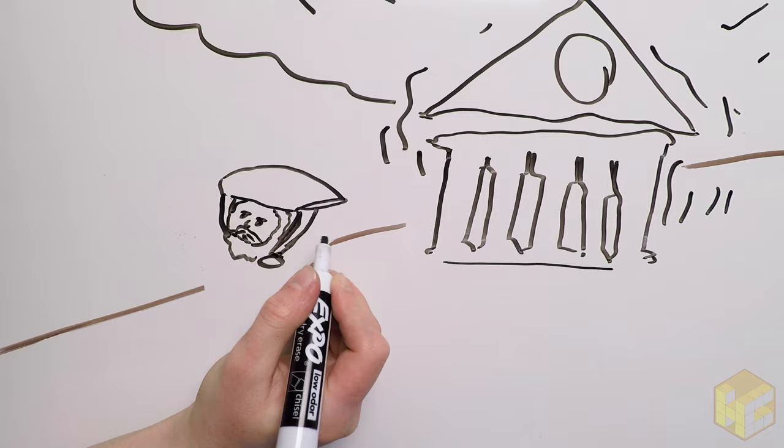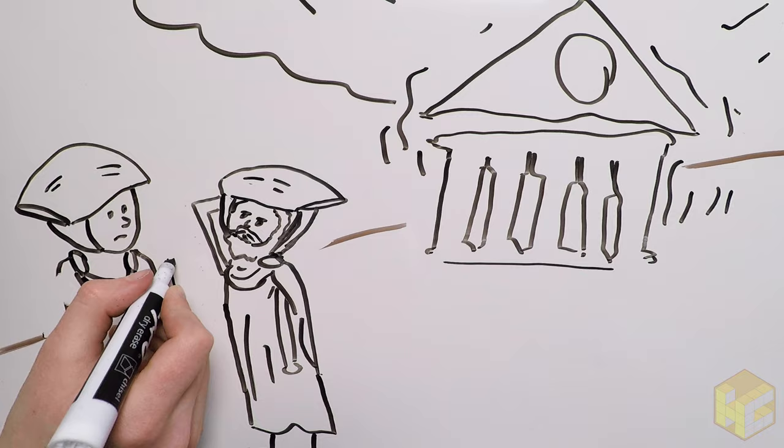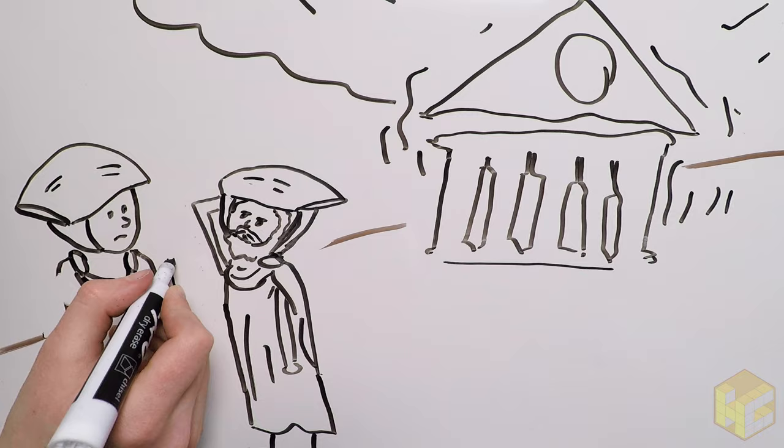Pliny the Elder and his men strapped pillows to their heads to protect themselves from the falling pumice and headed outside. They had to light their way with torches, because even when the sun rose, there was no light.